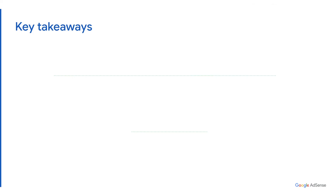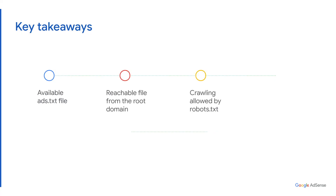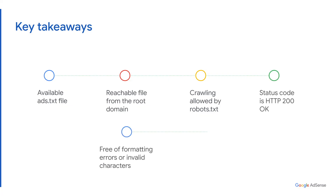To summarize, the six recommendations are: have an available ads.txt file; make sure the file is reachable from the root domain; allow crawling by robots.txt; have a status of HTTP 200 OK; make sure your file is free of formatting errors or invalid characters; and ensure your ads.txt is reachable via both HTTP and HTTPS.